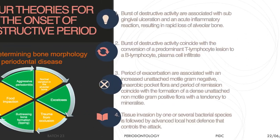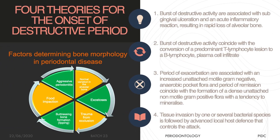There are four theories on the onset and destruction of periodontal disease. The first theory states that gingival ulceration results in pocket formation, and this pocket formation is associated with bone destruction. A burst of destructive activity associated with subgingival ulcerations and acute inflammatory reaction results in rapid bone loss — pocket formation is coincident with bone loss.